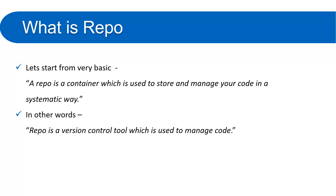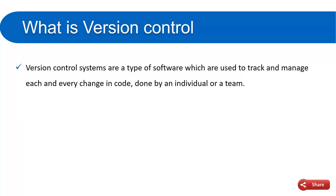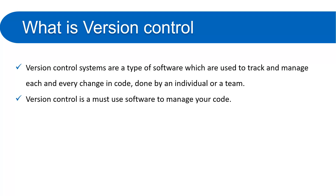In other words, a repo is a version control tool used to manage code. Version control systems are a type of software used to track and manage each and every change in the code. When an entire team or an individual is working on a project, changes are made daily, and version control tracks what change was done by whom. Multiple team members or an individual can work very efficiently with a version control system. Version control is a must-use tool for any project that has code or data.